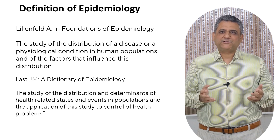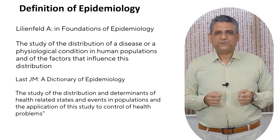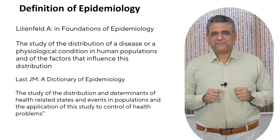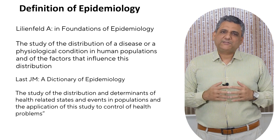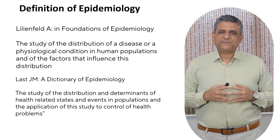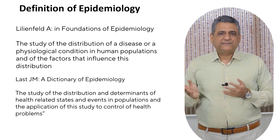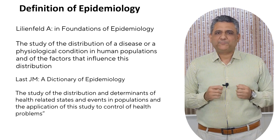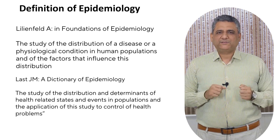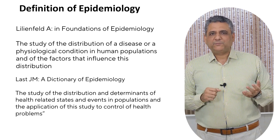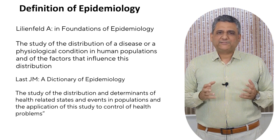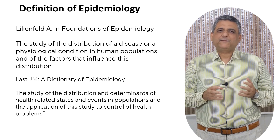If we move to the last definition from A Dictionary of Epidemiology, you'll notice an important expansion. It defines epidemiology as the study of the distribution and determinants of health-related states and events in populations, and the application of this study to the control of health problems. Here, the scope broadens — it's not just about diseases anymore, but also health-related states and events, meaning it covers wellness, injuries, risk behaviors, and even positive health outcomes. And most importantly, it adds the application: using what we learn to actually control and prevent health problems. Together, these definitions show how epidemiology has evolved from describing and understanding patterns of disease to actively applying that knowledge for the betterment of public health.